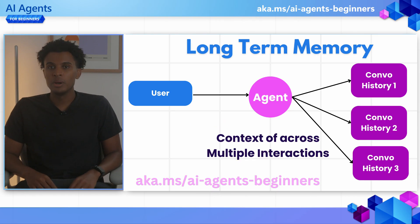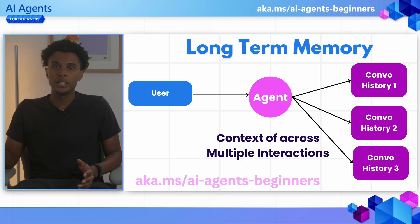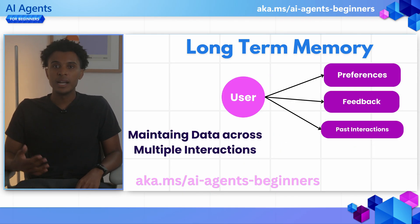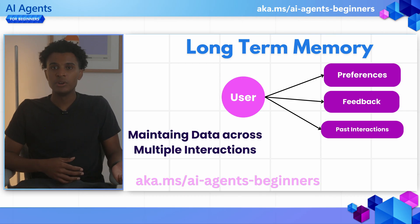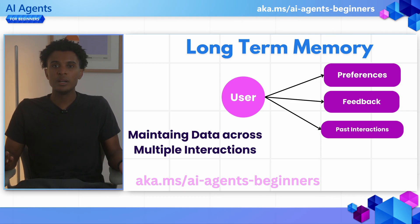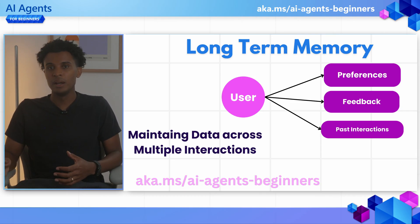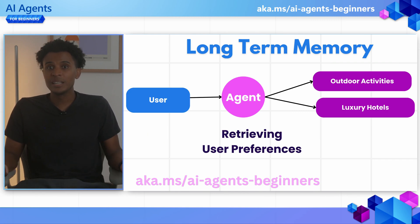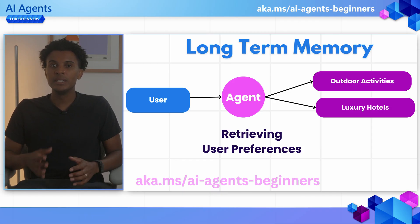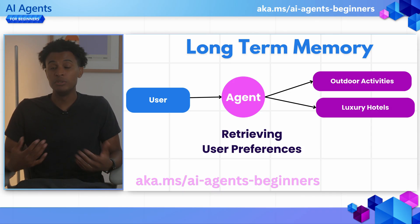Long-term memory is how to keep information that lasts across multiple conversations. This is important for data connected to users' preferences, experiences, feedback, past interactions, or anything you want to keep stored over a longer time period. So if a user is known to enjoy outdoor activities and luxury hotels, the agent can make recommendations based on this knowledge for future bookings.